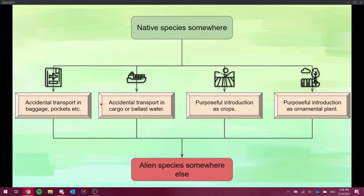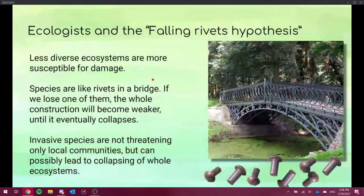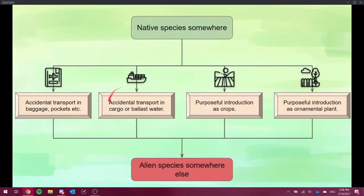Accidental transport in cargo or ballast water. To be honest, ballast water is referring more to the animals, because not always plants can survive that. But cargo is a thing. Why do you do that? Stop. Cargo is a thing, because for example, a bird feed or, like, in my case, a rabbit feed, in general, animal feeds can contain seeds of alien species or invasive species.